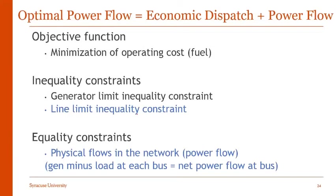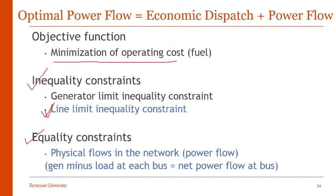The general structure of optimal power flow is a combination of economic dispatch and power flow. The objective function is very similar to economic dispatch, involving minimizing the total operating cost, which includes the cost of fuel. We have inequality constraints — specifically generator limits (minimum and maximum production capacity) and line limits, which ensure power cannot flow above specified limits. For equality constraints, we consider power flow for the entire network, meaning generation minus load at each bus equals the net power flow at that bus.